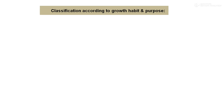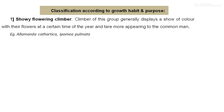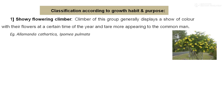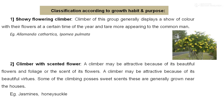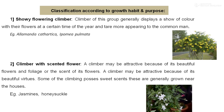Clambers, on the basis of their growing habit and purpose, are classified into: showy flowering clambers — this group generally displays a show of flowers at a certain time of the year, and they are more appealing to the common man, having attractive flowers, like Allamanda. And clambers with scented flowers — clambers may be attractive because of their beautiful flowers and foliage or the scent of their flowers. Some clambers possess a sweet scent and are generally grown near the house, like jasmine and honeysuckle.